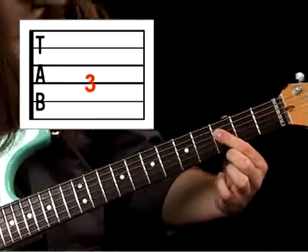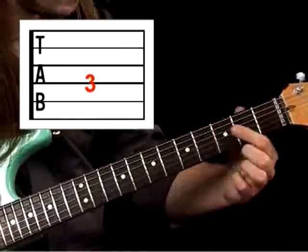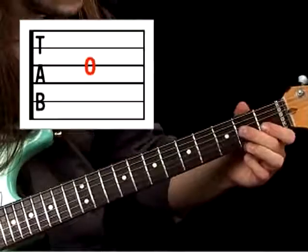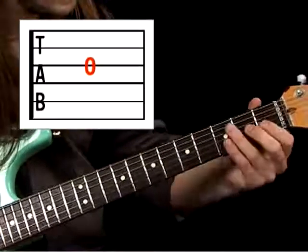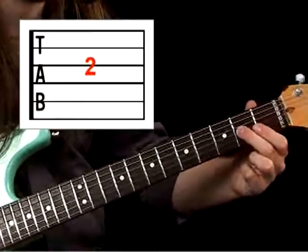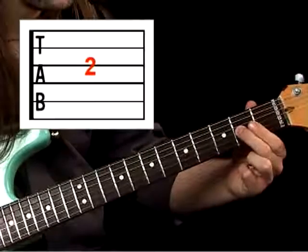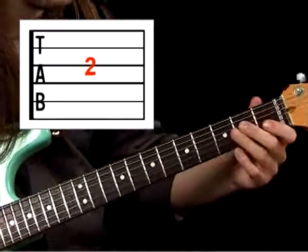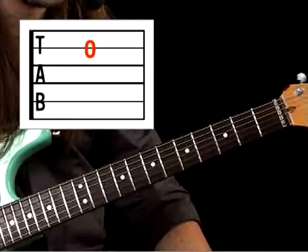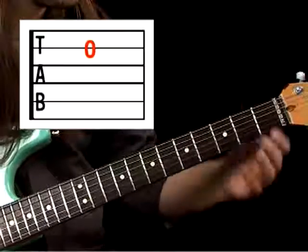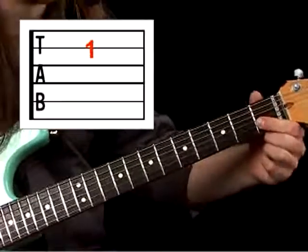then on the next string up we're going to have a zero, then a two, and then we're going to have a zero on the next string, and then we're going to have a one on that string as well.